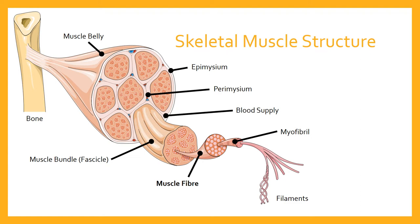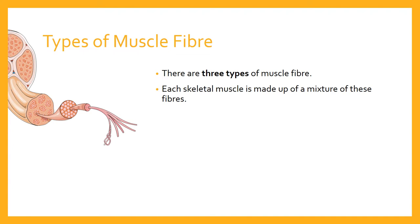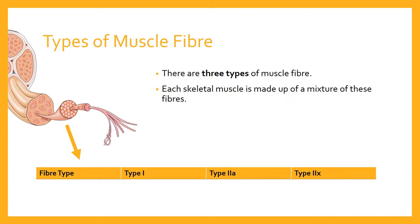We're going to focus on muscle fibres because muscle fibres can be one of three different types. Every single skeletal muscle in the body is made up of a combination or mixture of these fibres. Some very small muscles — perhaps controlling the eye or making minute movements — may not have all three. But the vast majority of skeletal muscles, and certainly the larger muscles we think of in sporting movements — the quadriceps, hamstrings, gastrocnemius, biceps, and triceps — will be made up of a mixture of all three types.